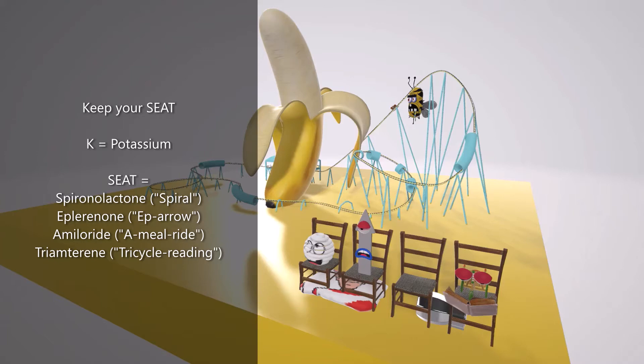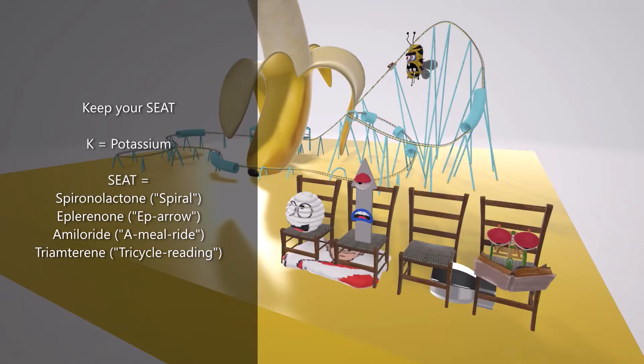But let's make this a little bit more visual. In the first seat over here we see this spiral guy, the spiral lactate guy for spironolactone. Next to him we see the up arrow guy for eplerenone. Now where's the third guy? He's actually on a ride. Let's take a look.